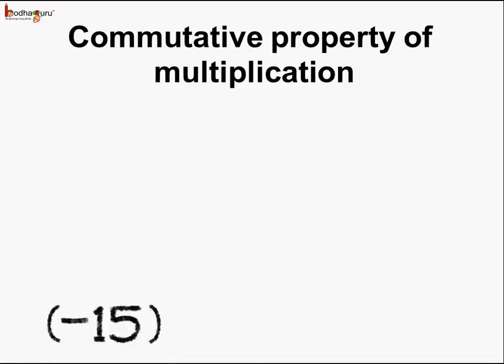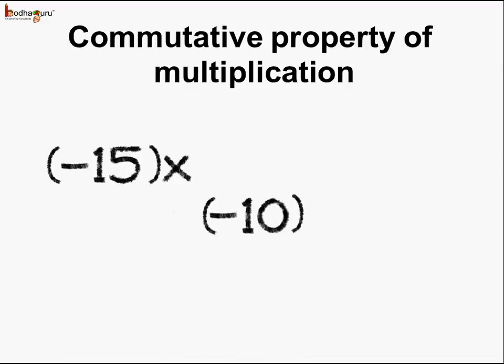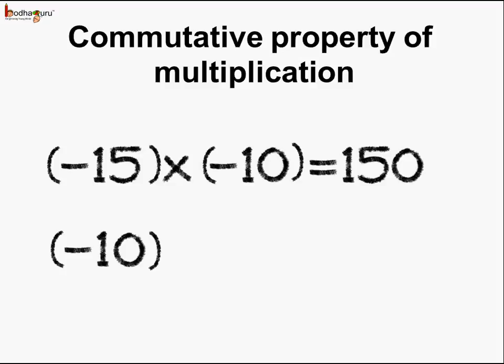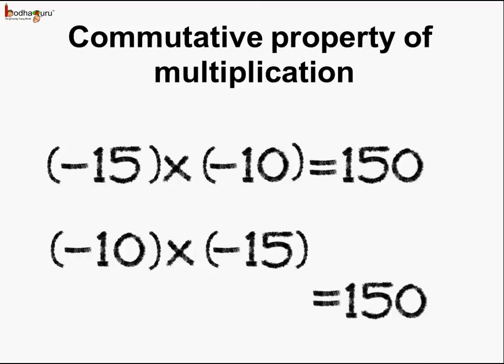Let's take another example. Minus 15 multiplied by minus 10 is equal to 150, as the result of multiplication of two negative numbers is a positive number. Let's change the order: minus 10 multiplied by minus 15. Here again the answer would be a positive number, and 10 multiplied by 15 is 150, so the answer is 150.